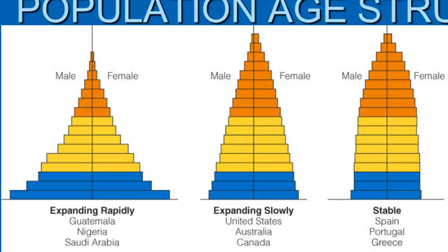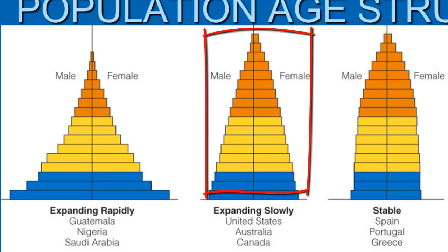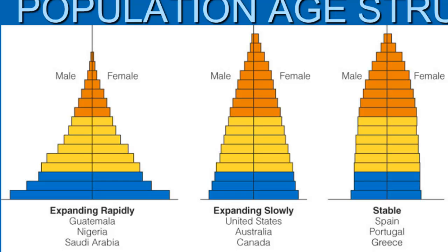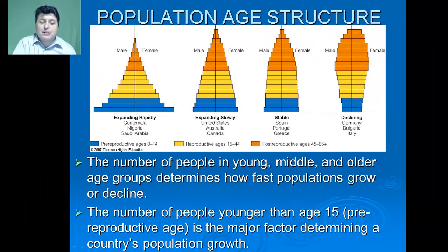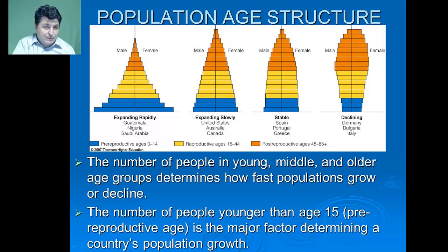Populations growing much more slowly have a more acute pyramid or even a tower shape where the age distribution is equalized. In a situation of zero or declining growth, we have very few young people and a moderate number of middle to old age individuals. It is the number of people younger than age 15 — our pre-reproductive age — that will be the major factor in determining a country's population growth, as those individuals will soon move into the reproductive age bracket.